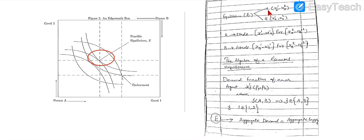If person A trades, it will trade x1_A minus w1_A for x2_A minus w2_A. This means person A will exchange good from commodity one to commodity two, or from commodity two to commodity one, to get a higher level of utility or maximum satisfaction. Similarly, agent B will also trade — agent B has x1_B and x2_B and will exchange x_B minus w1_B for x2_B.